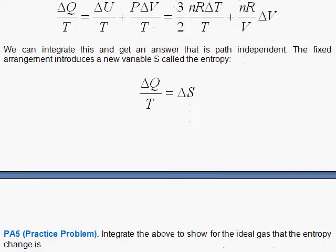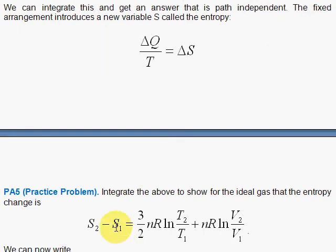So if we come down here, we'll see the 3/2 NR in front of the T stuff and the NR in front of the V stuff. That solves it.